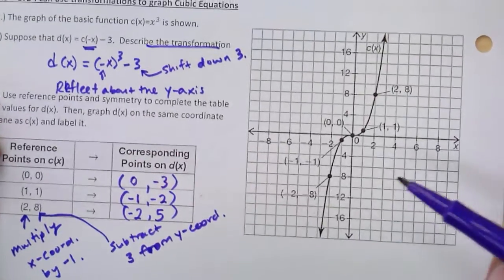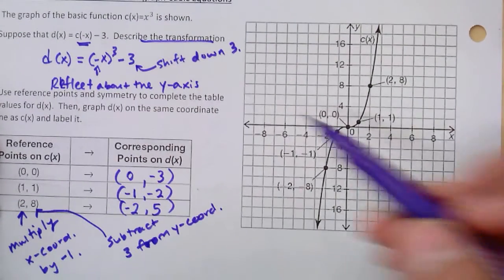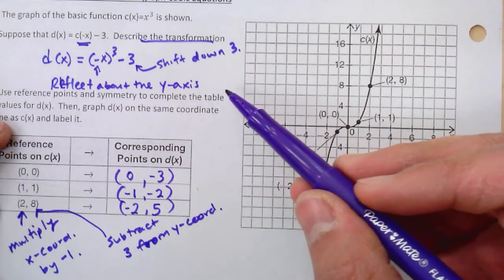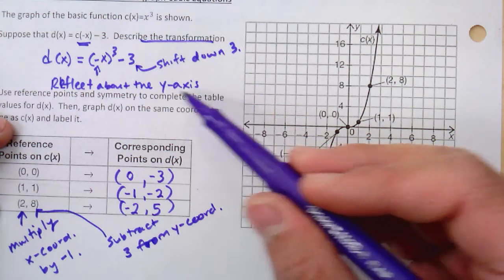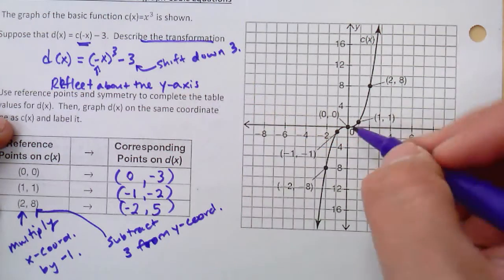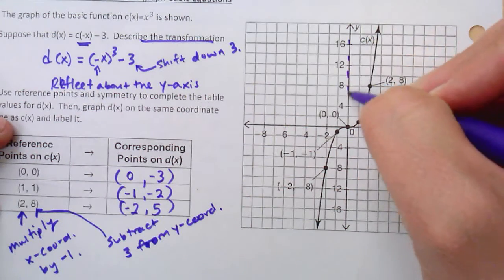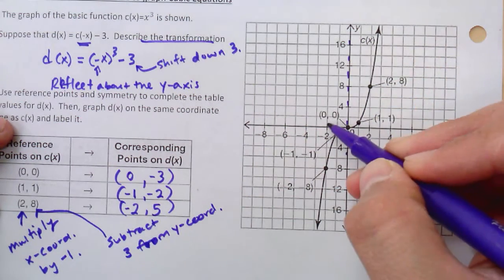So when you go to graph, you can graph these reference points, or you can just graph by your transformation up here. So let's just practice graphing by transformation. The first transformation I'm going to do is reflected about the y-axis. So all these points,